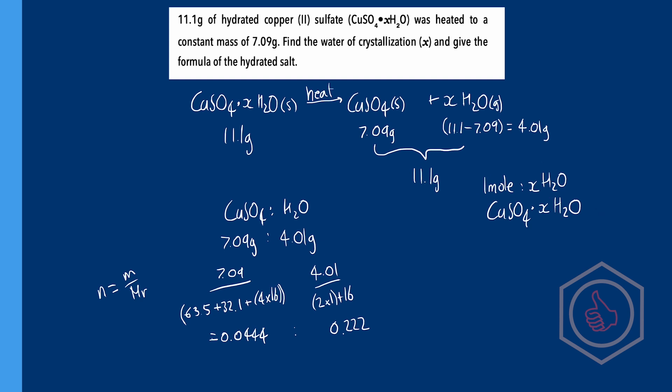Well to find this molar ratio all we need to do is divide both values by the moles of copper sulfate. 0.0444 divided by 0.0444 equals 1, and 0.222 divided by 0.0444 equals 5.01, meaning we now have a molar ratio of 1 to 5.01, so one mole of copper sulfate to 5.01 moles of water, basically 1 to 5.